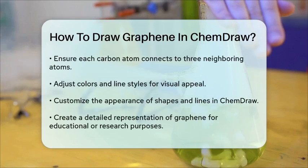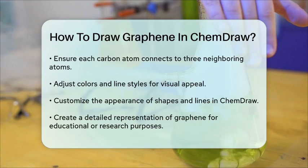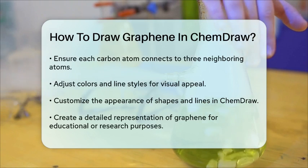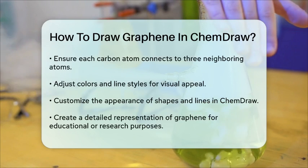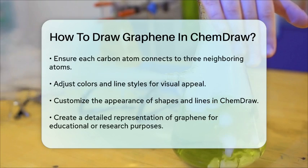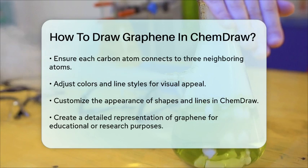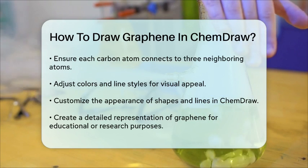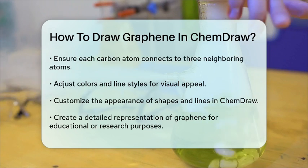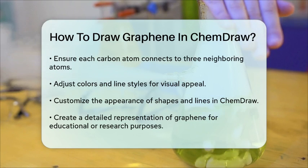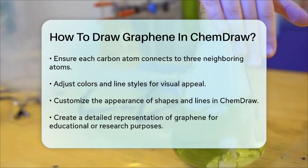Finally, you may want to adjust the colors and line styles to enhance the visual appeal of your drawing. ChemDraw allows you to customize the appearance of shapes and lines, so feel free to experiment with different styles to make your graphene representation stand out. By following these steps, you can successfully create a detailed and accurate representation of graphene in ChemDraw, showcasing this remarkable material's unique structure.